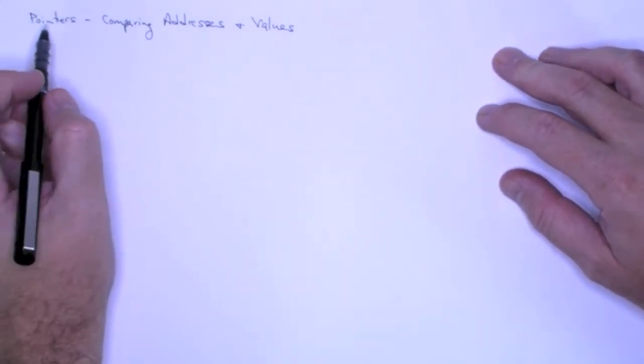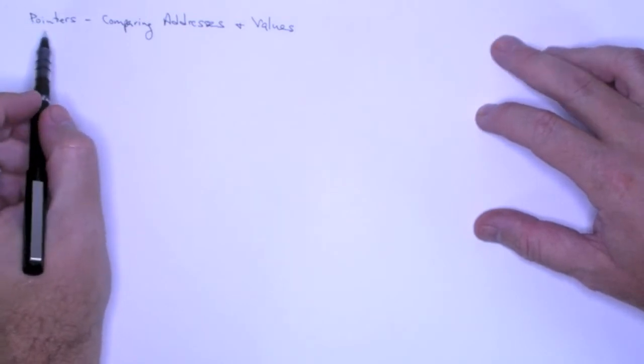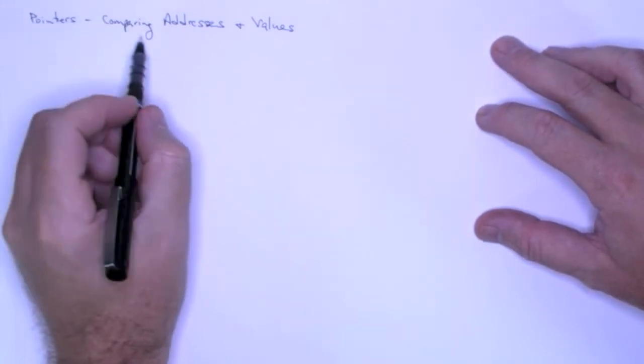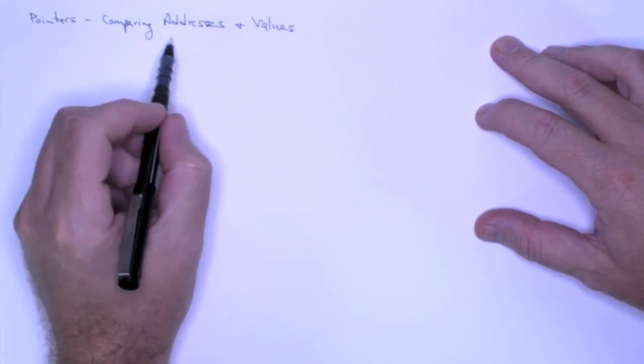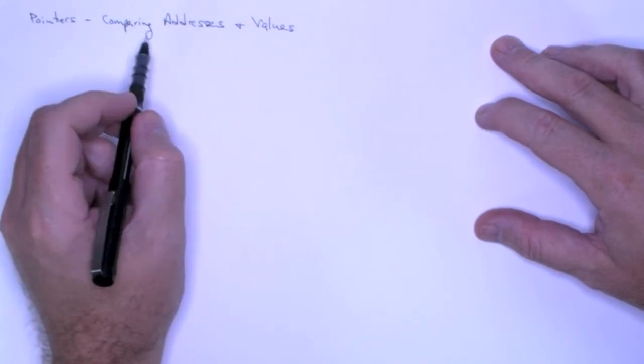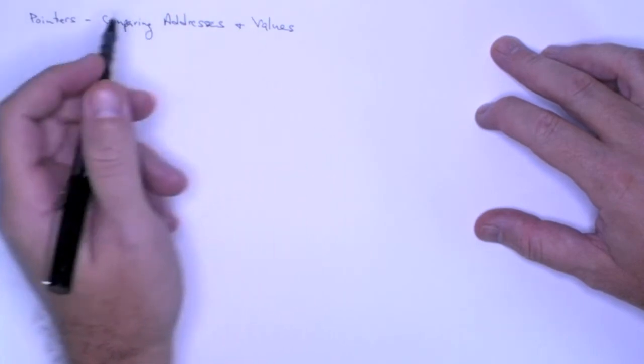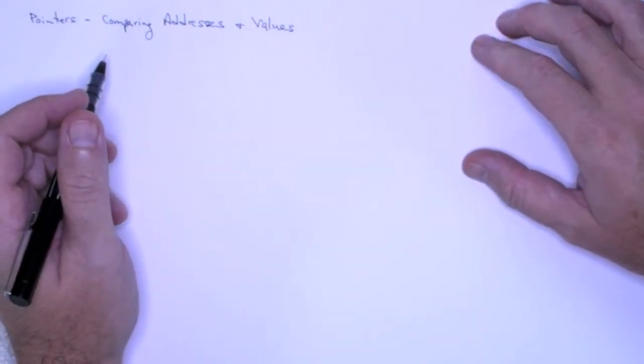In this video lecture we're going to continue talking about pointers and we're going to look at various ways that we can compare pointers, the addresses, their addresses, and then the objects or the values to which they point.